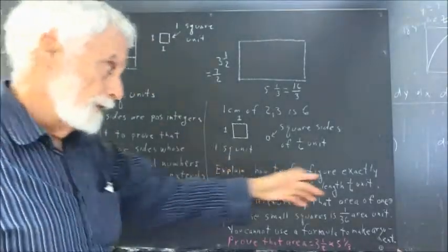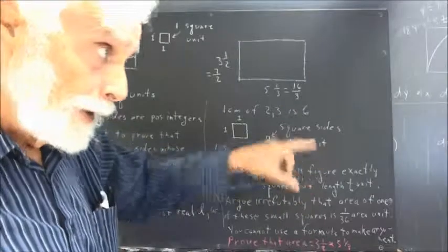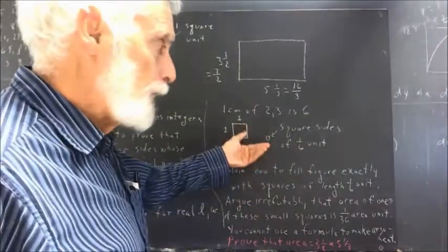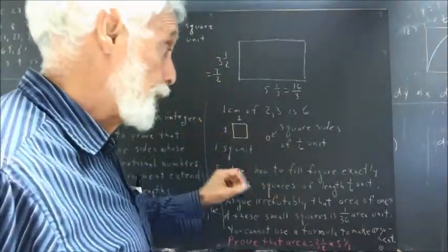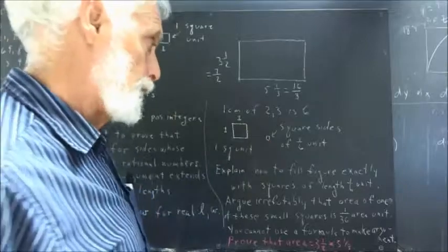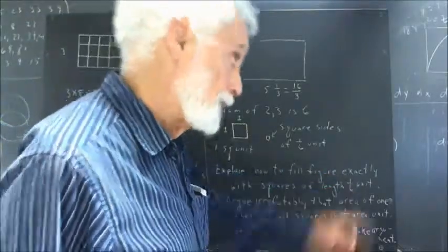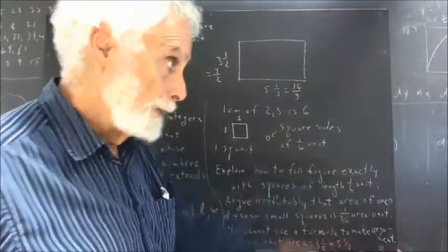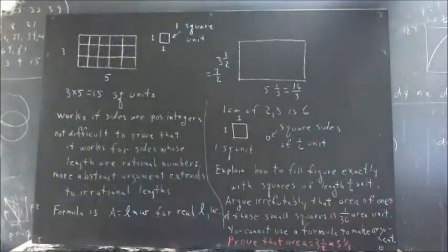I'd like you to explain how to fill the figure exactly with squares of length one-sixth unit. Now, what I mean by a square of length one-sixth unit, and I don't have room to write out all the words, is a square whose sides each have length one-sixth unit. Now, if one side has a length one-sixth unit and it's a square, then both sides have length one-sixth unit. So I can talk about squares of length one-sixth unit if we simply agree that the length is the length of a side. I could say side length, but I don't have a lot of room here.